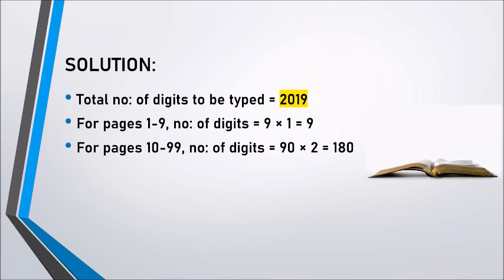The one-digit and two-digit page numbers together make up 9 + 180 = 189 digits.